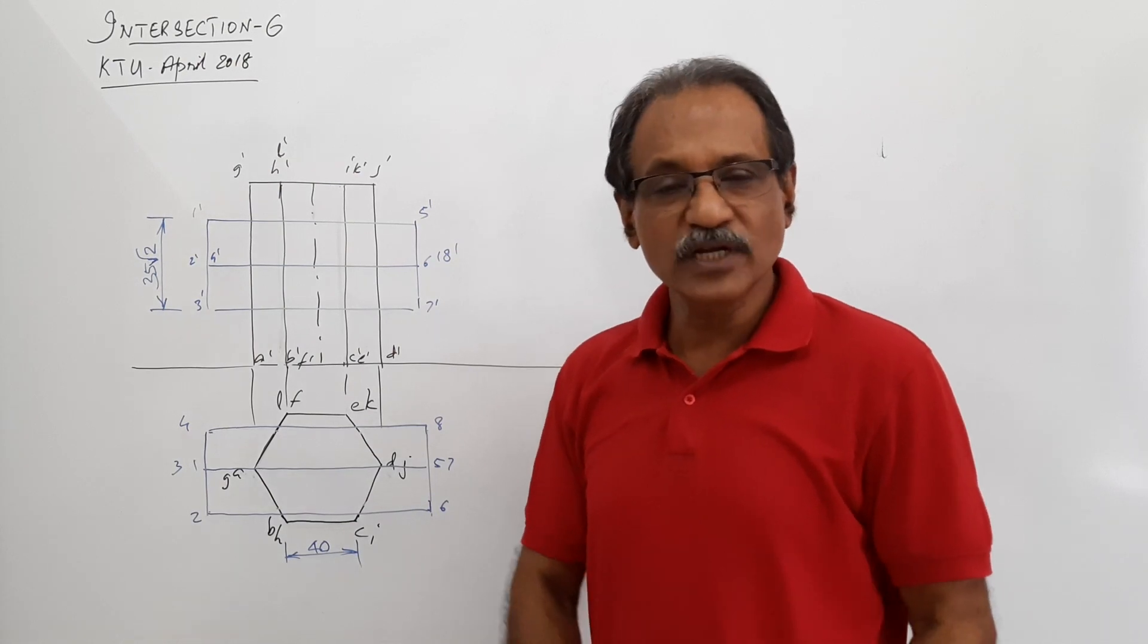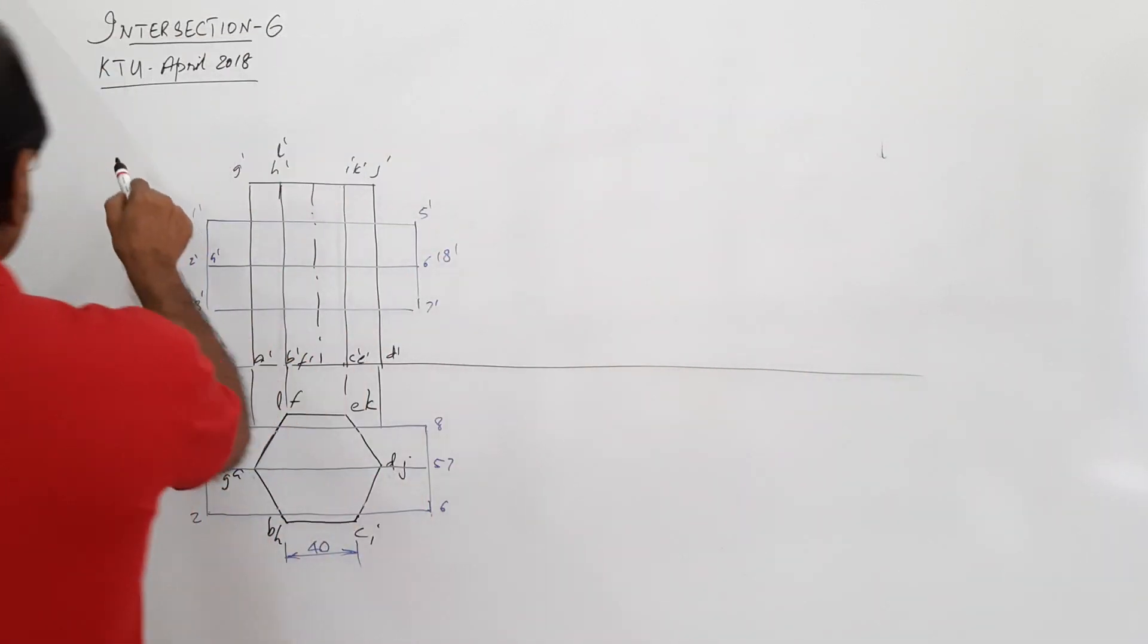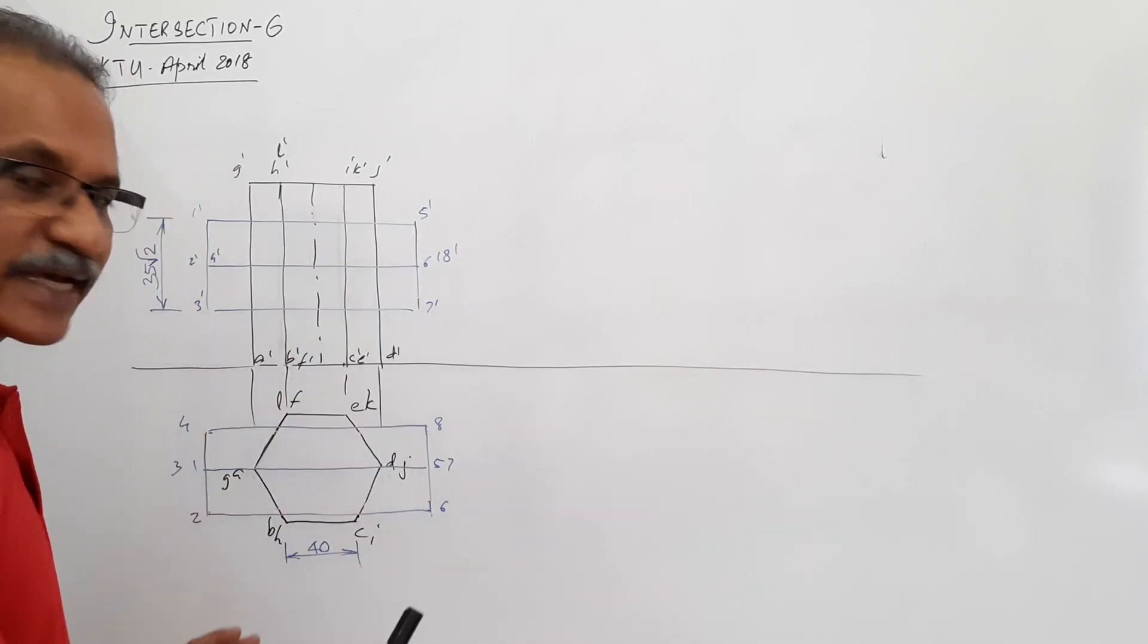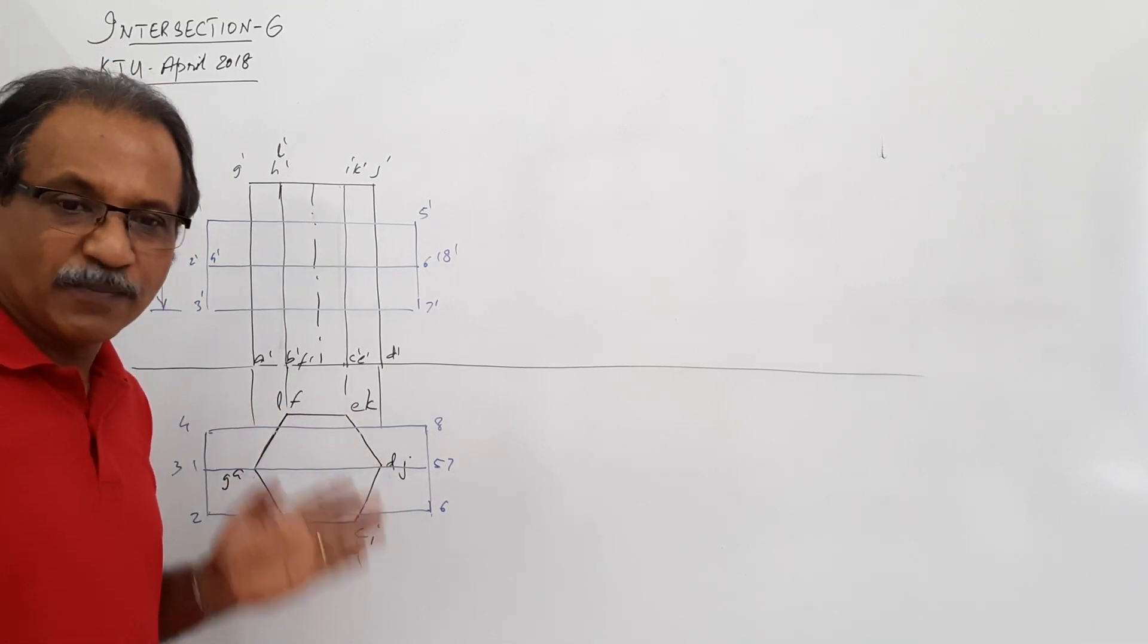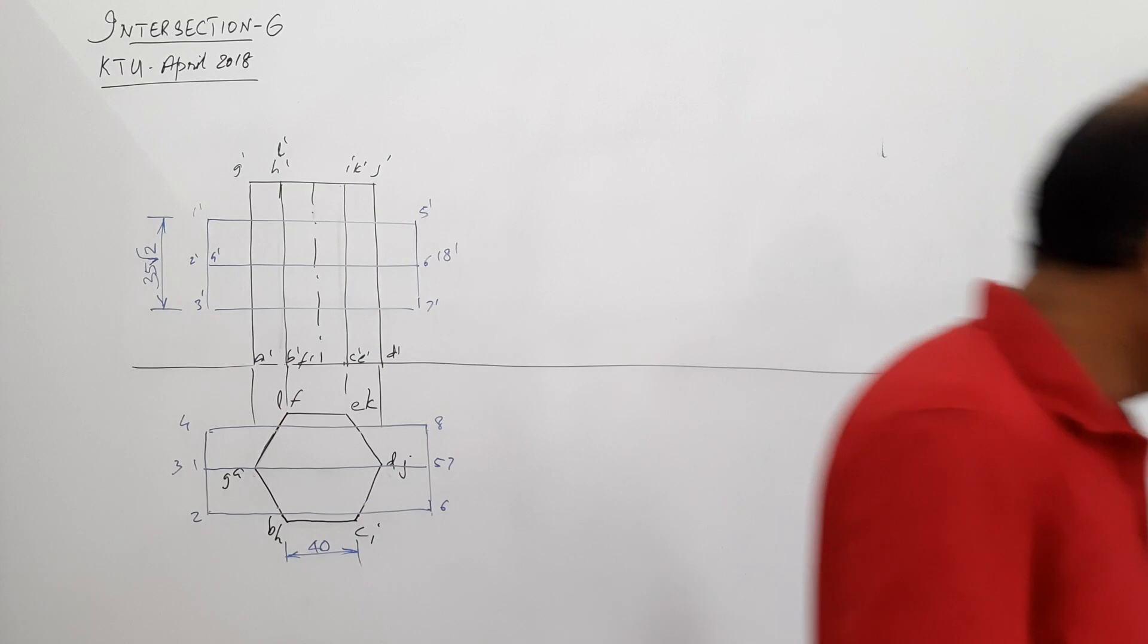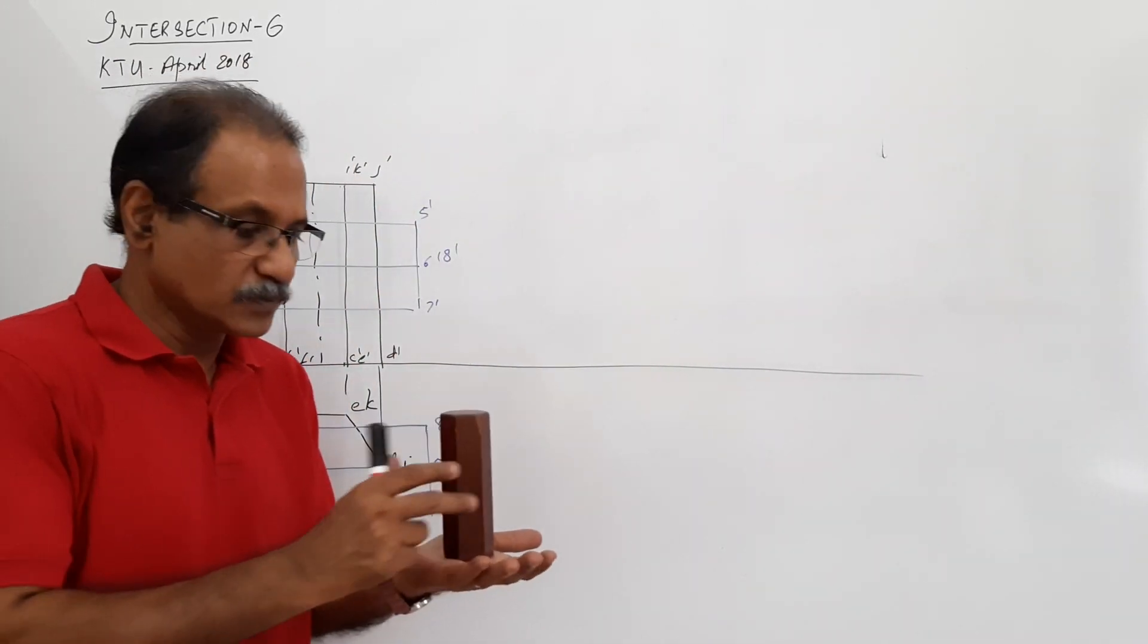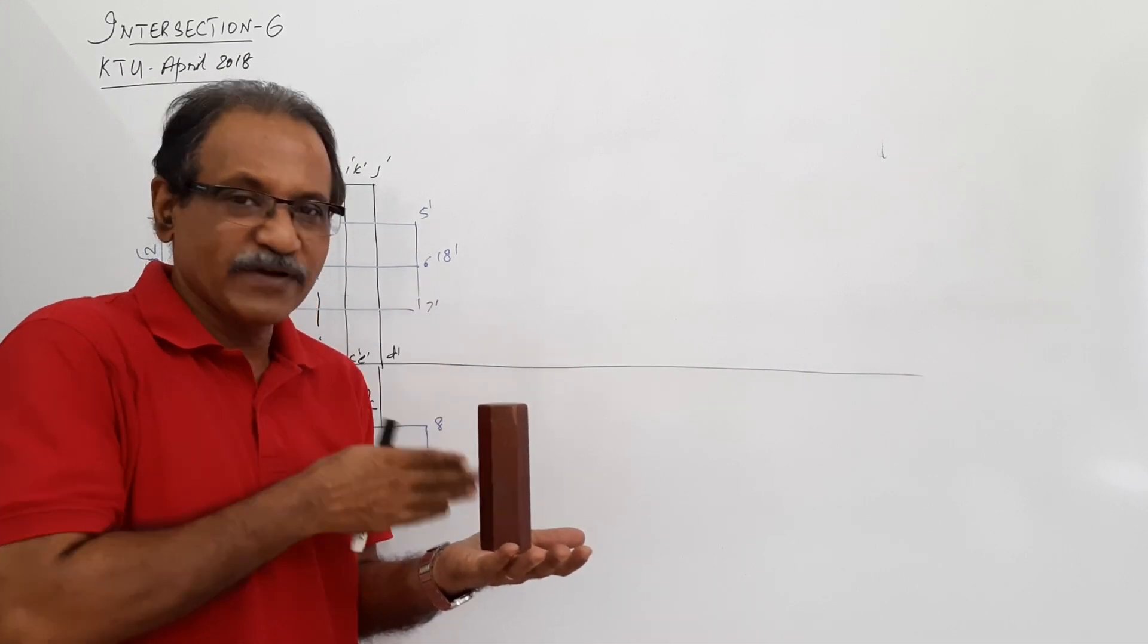It says about a hexagonal prism 40mm axis, standing on its face on the ground with a side of face parallel to VP, or a rectangular face parallel to VP. A hexagonal prism standing on its base on the ground with a side of base or rectangular face parallel to VP.